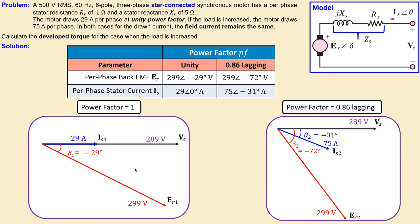In summary, increasing the load with constant field current changed the power factor from unity to 0.86 lagging. The back EMF magnitude stayed at 299 volts, while the torque angle shifted from minus 29 degrees to minus 72 degrees. The stator current increased from 29 amps at zero degrees to 75 amps at minus 31 degrees, and the developed torque for the increased load was calculated to be 309 newton-meters. Thank you for watching — if you have any questions or suggestions, please let me know.